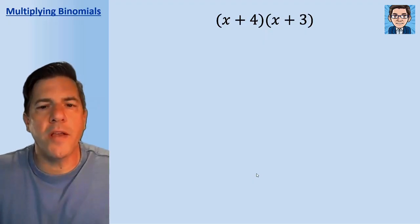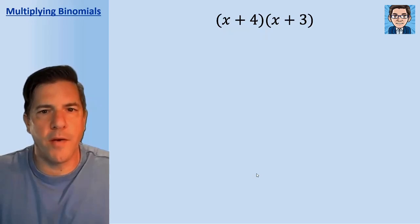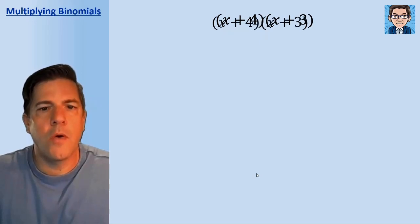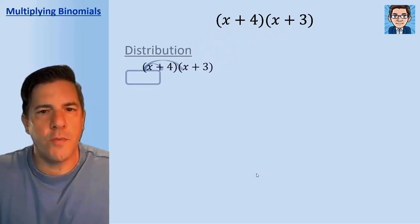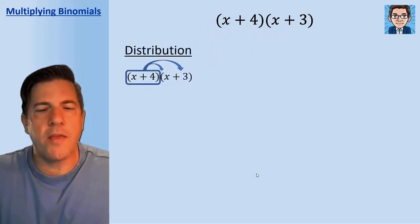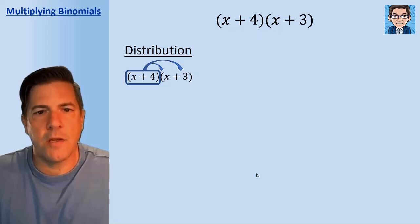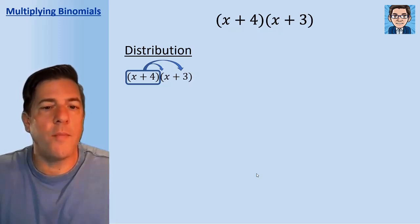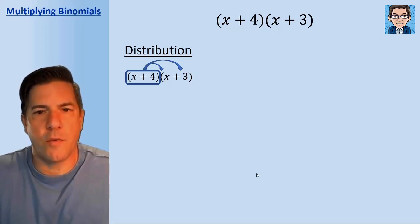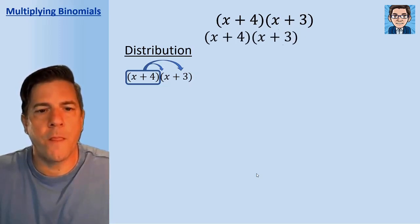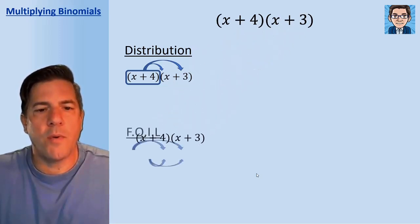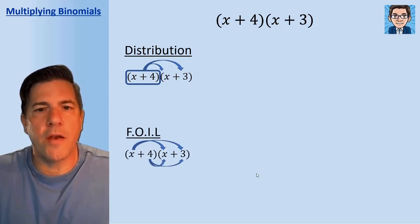We're going to talk about three ways to multiply binomials. We're going to do it by distribution, where we take the x plus 4 and multiply that by the x, and then take the x plus 4 and multiply it by the 3. We're going to talk about FOIL — multiplying the first, the outer, the inner, and the last.